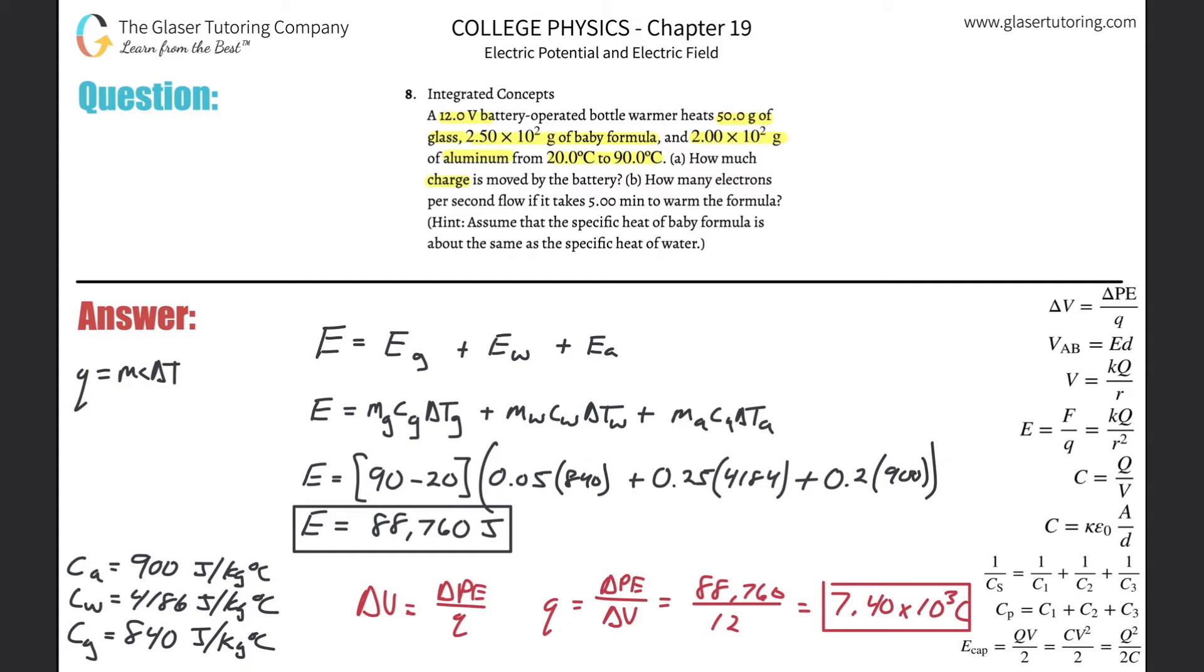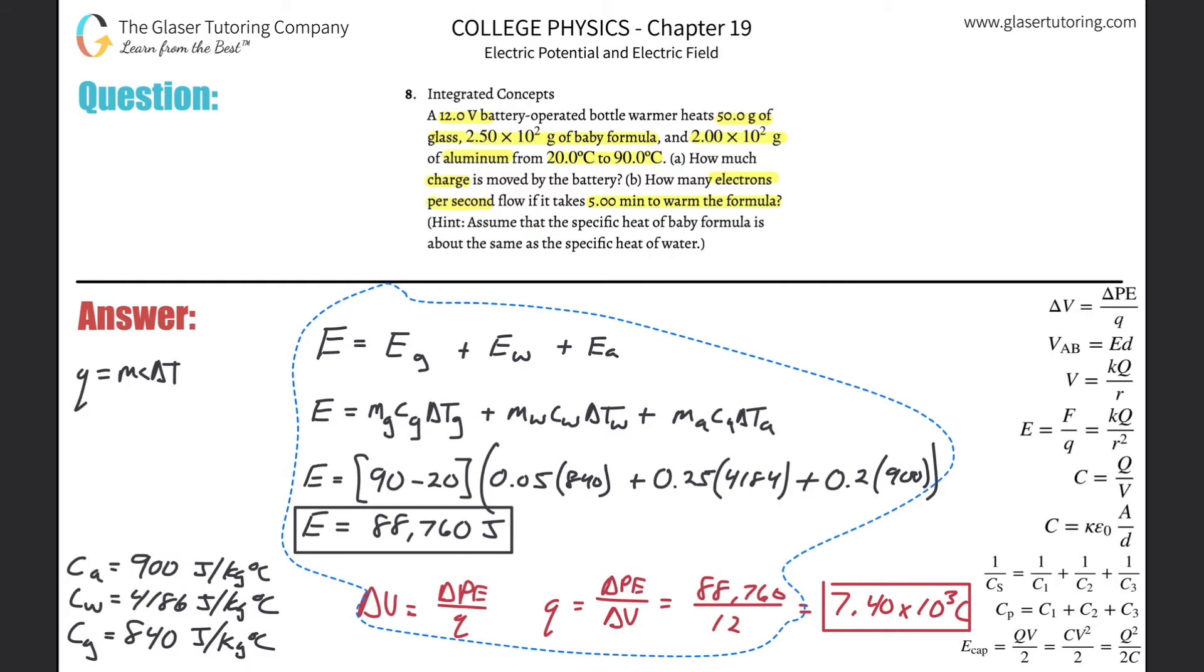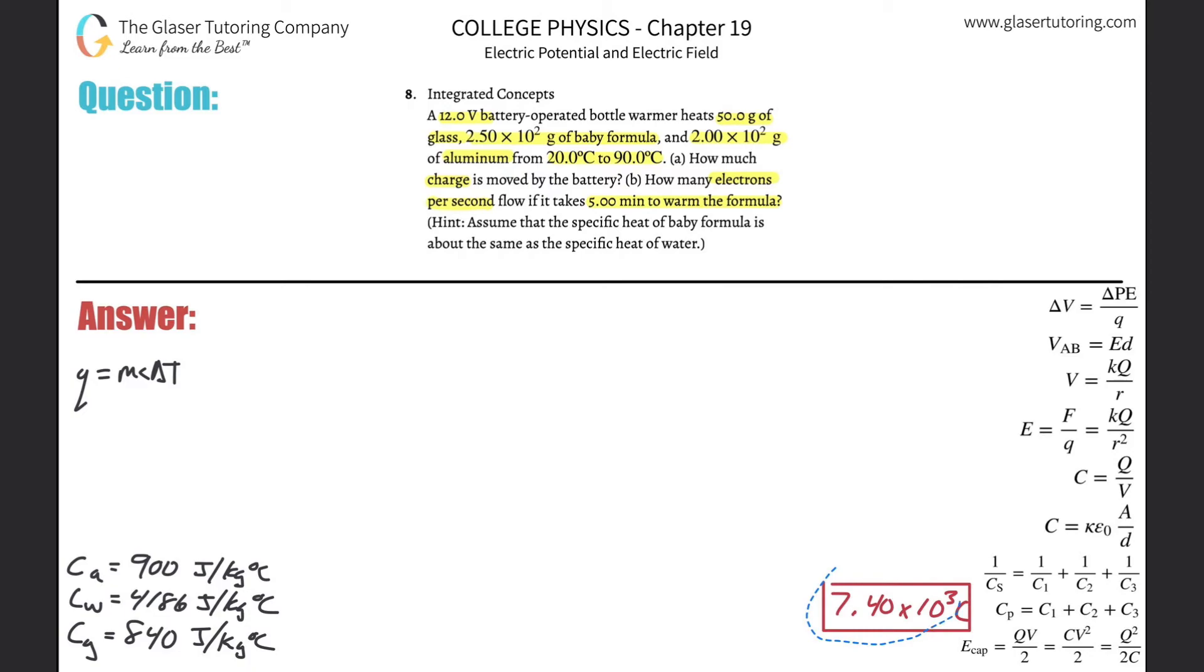Then letter B says now how many electrons per second flow if it takes 5 minutes to warm the formula. So I'm going to keep our Coulomb answer. Remember now, this many Coulombs correlates with a certain number of electrons. Recall that one electron has a charge of negative 1.6 times 10 to the minus 19th Coulombs.